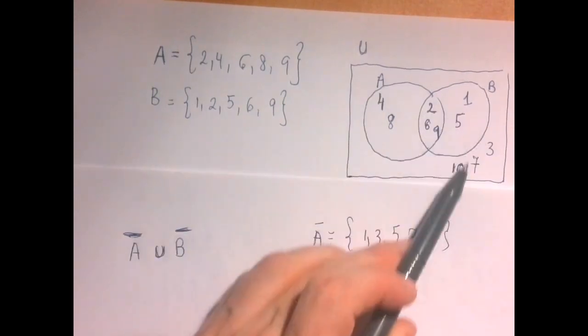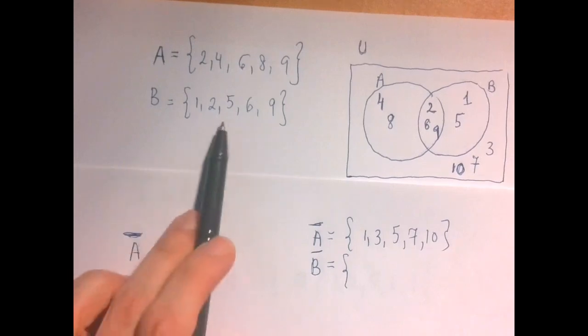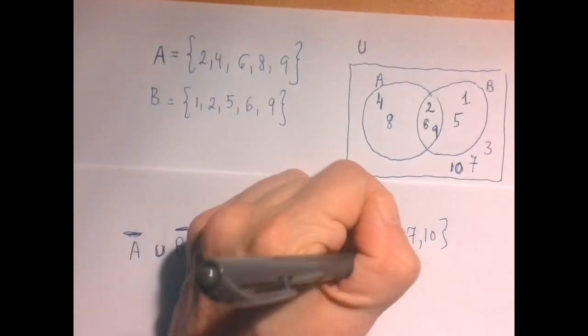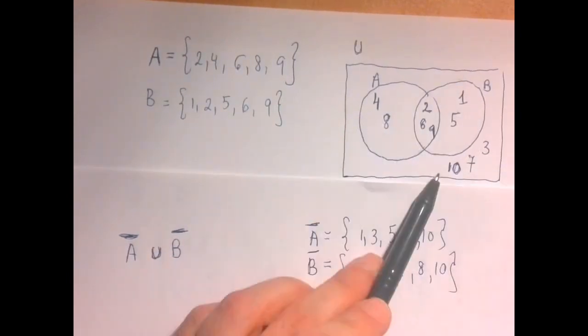Outside of A, 1, 3, 5, 7, 10. And the complement of B would be everything except for these 5, so that's 3, 4, 7, 8, 10. So outside of B, outside of this, 3, 4, 7, 8, 10.